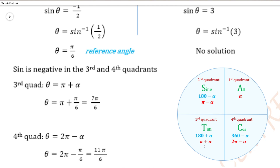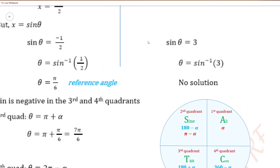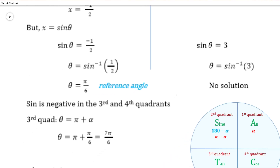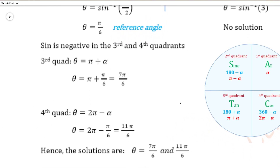In the fourth quadrant, theta is 2 pi minus alpha, so that is 2 pi minus pi over 6, which gives 11 pi over 6. For the other factor, x equal 3 gives sine theta equal 3, and theta equals sine inverse of 3 will give an error in the calculator, so there is no solution for that part. Therefore, our final solution comes from the first half: theta equal 7 pi over 6 and theta equal 11 pi over 6.